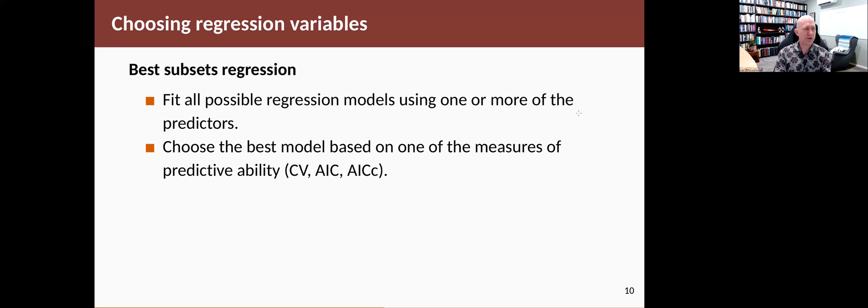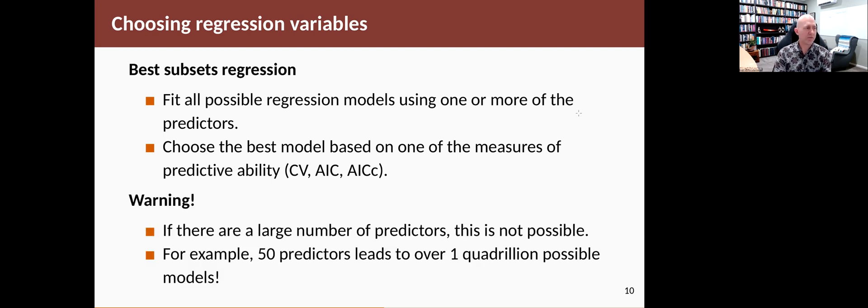So there's a couple of ways we could choose regression variables. We could fit all of the possible regression models using one or more of the predictors. And then we would pick the best model based on how well the models predict using something like CV or AIC or AICc. These are all asymptotically equivalent to each other. The problem with this strategy is that there's too many models to compare. If there's a large number of predictors, it's just not possible to fit all of the possible regression models.